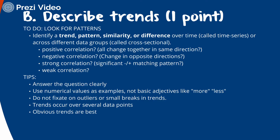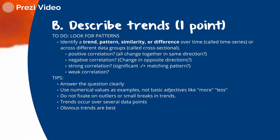The good news is that questions asked of you will have a pattern, a trend, a correlation — you just need to talk about what's there. My recommendation is to always go for the obvious ones; that's usually the answer being looked for. Don't get fixated on outliers or small breaks in trends. Use numerical values as examples, not basic adjectives like 'more' or 'less,' and always answer the question clearly.